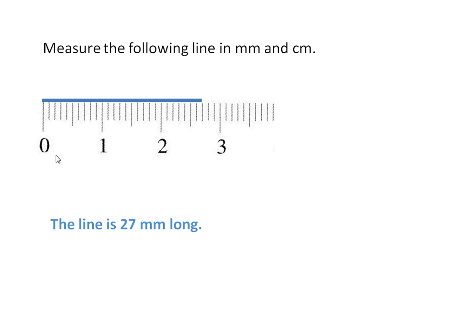Now we will measure the line in centimetres: one, two, two point five, two point six, two point seven. The line is two point seven centimetres long.